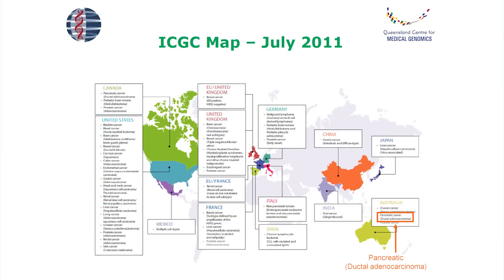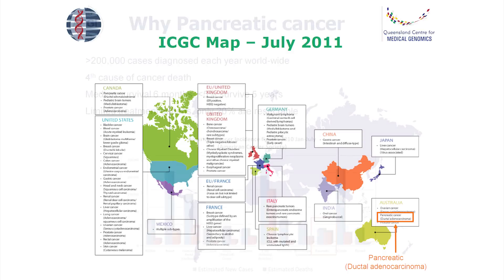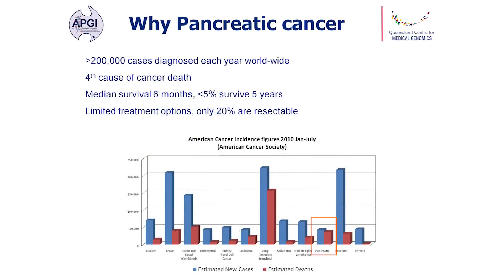We are the Australian arm of the ICGC project, which is to sequence 500 tumour-normal pairs over five years. We work primarily on pancreatic cancer, doing about 375 pancreatic cancer samples and about 150 ovarian cancer samples. We've had a recent collaboration with other groups which is why we're only doing 375 pancreatic cancers rather than the 500.